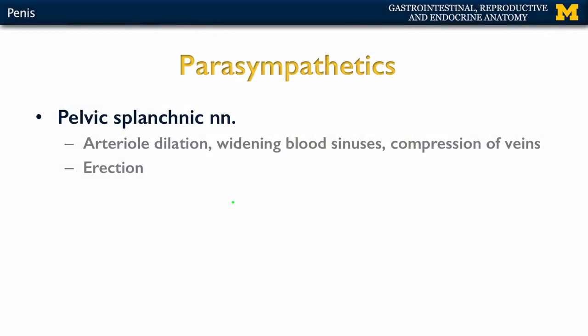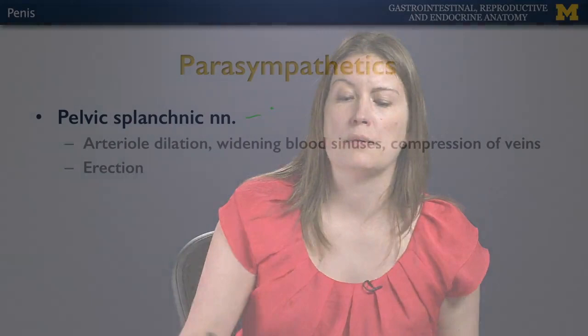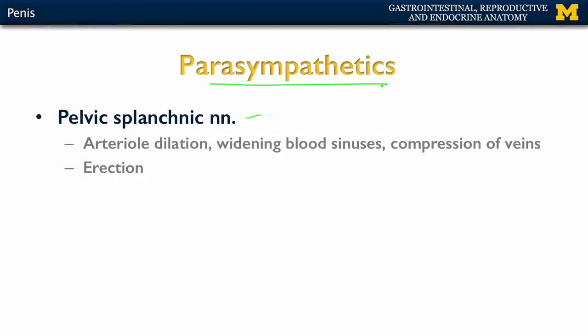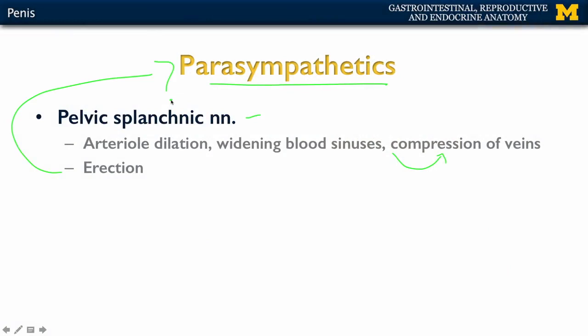Now let's talk about the innervation of the penis, which is almost exclusively autonomically innervated — parasympathetics and sympathetics both play a big role. When talking about parasympathetics associated with the penis, these are going to be the pelvic splanchnic nerves. These particular splanchnic nerves are really the only ones we associate with parasympathetics. When innervation occurs from these nerves, you're going to have artery dilation and a widening of the blood sinuses, allowing for engorgement and the movement of blood into the erectile tissues. That widening also compresses the veins so blood cannot drain from the erectile tissue. So it is these parasympathetics that play the big role in causing erection.